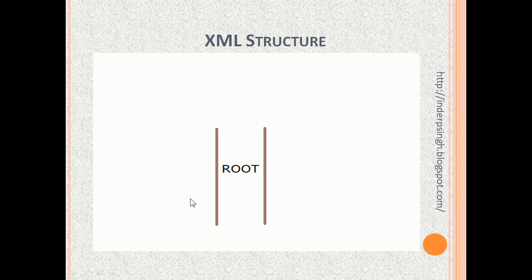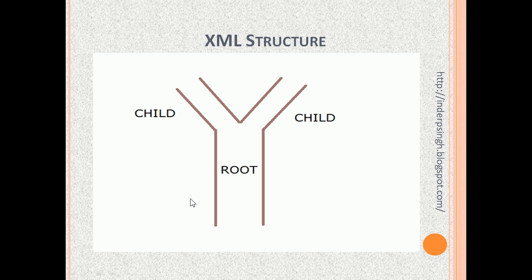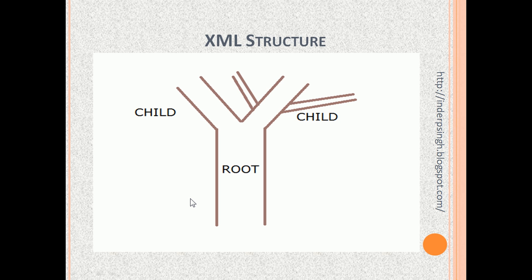We can understand the XML structure by using a tree analogy. Imagine the root of the tree — it is similar to the root element in XML. The root can have no children, one child, or more than one child. Similarly, a child element can further have zero, one, or multiple child elements. For example, one child may have no child elements, while another child may have two child elements like branches of the tree.